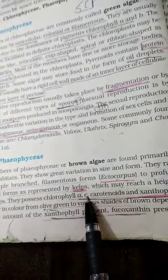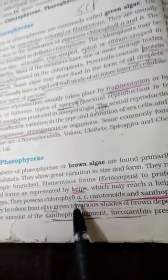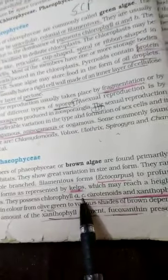On the basis of pigment, the algae can be classified, can be differentiated. A and C, carotenoids.